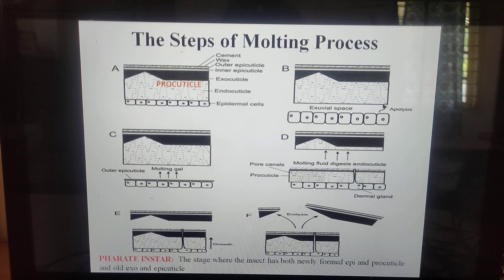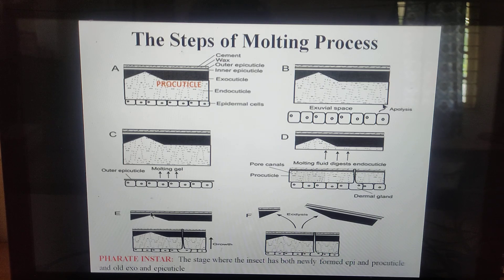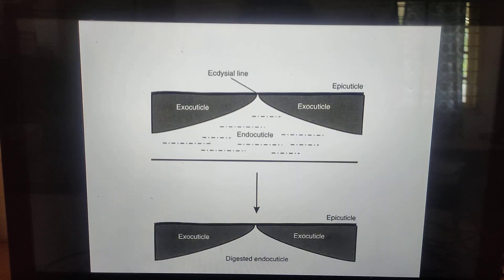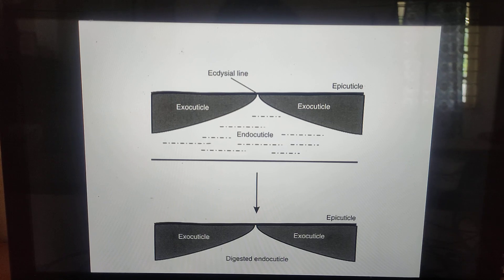Ecdysis involves two steps. First, rupture of the old cuticle: the insect increases its body volume through intake of air or water, enhancing blood flow to the head and thorax. This causes the old cuticle to rupture along a predetermined line of weakness known as the ecdysial line.